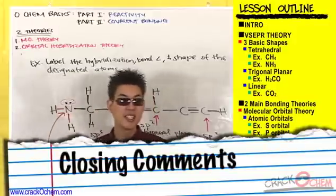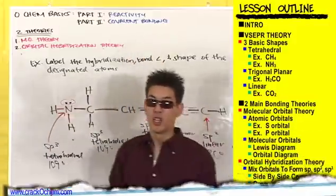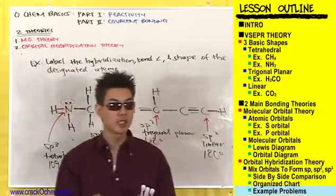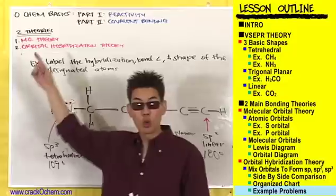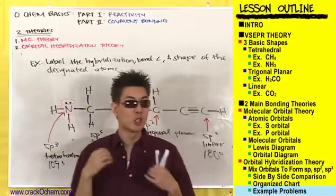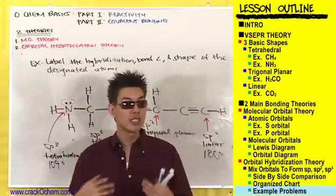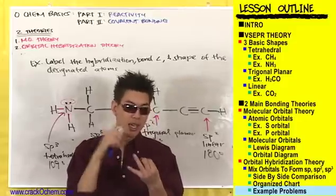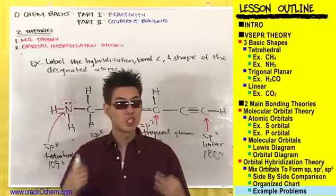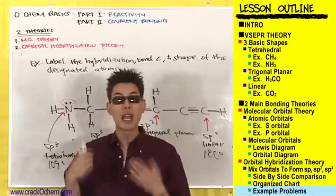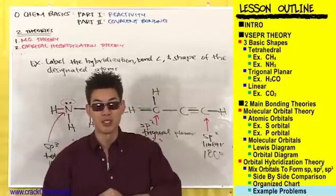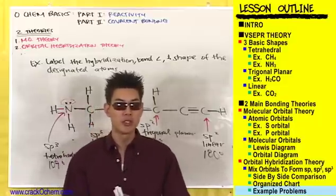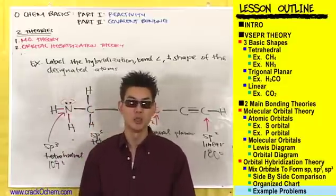That's everything you need to know about covalent bonding. Molecular orbital theory tells us bonding occurs by overlapping orbitals and sharing electrons. Orbital hybridization theory tells us orbitals mix together to create the largest possible overlap in bonding. The type of hybridization — sp, sp2, or sp3 — determines the shape, bond angles, and number of single bonds an atom can make. Hopefully this unraveled a bit of the mystery behind covalent bonding.